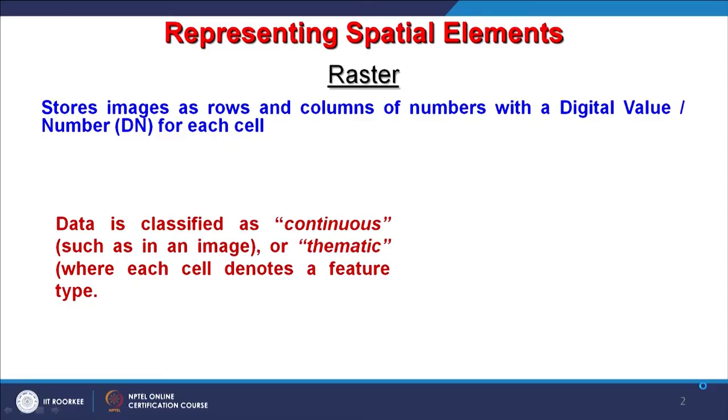Raster data again has two types, which we will also see and compare with vector data. Raster data is a little simpler compared to vector data, and it is basically organized in rows and columns. Mathematically, we can look at it as a two-dimensional matrix, where the number of rows and columns need not be the same — if they are equal, we have a square matrix; if different, the overall shape is rectangular.